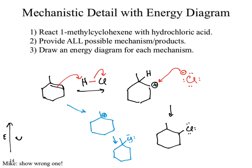Energy - there's our reactant. If we follow the black path, I'm forming a carbocation. Higher or lower in energy? That should be higher in energy. Why? It's charged. So I'll draw the intermediate for that one. Then I form my product. Higher or lower in energy than my intermediate? Lower, because it's not charged. Higher or lower in energy than my starting material? Lower in energy, because there's no pi bond. For our black path, something that looks roughly like this.